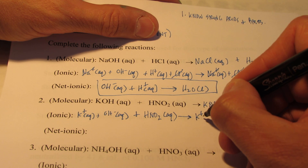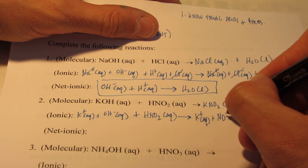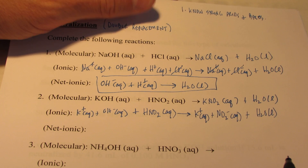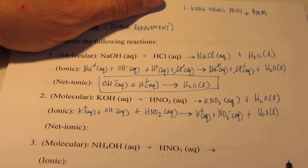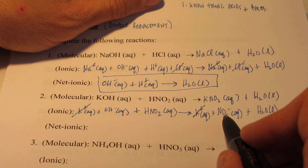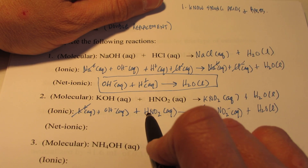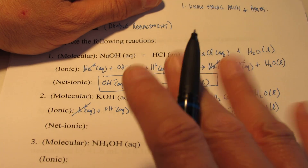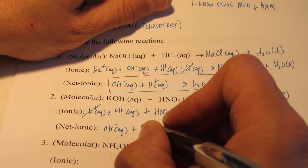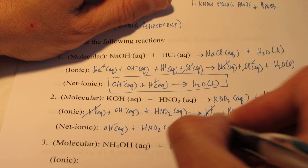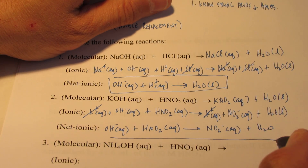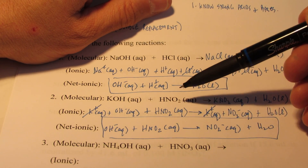KNO2 is soluble, so it splits up into potassium ions and nitrite ions. Water sticks together. For spectators: K+ ions are spectators. The nitrites are not — NO2− here is stuck to a proton on the reactant side, so they're not the same and we cannot cancel them. What's left: hydroxides and nitrous acid reacting to form nitrite ions and water. That's the net ionic equation — this is what we have when we react a strong base with a weak acid.